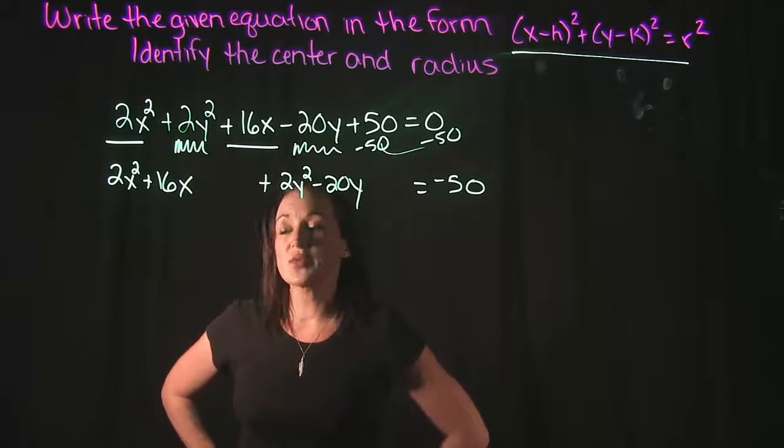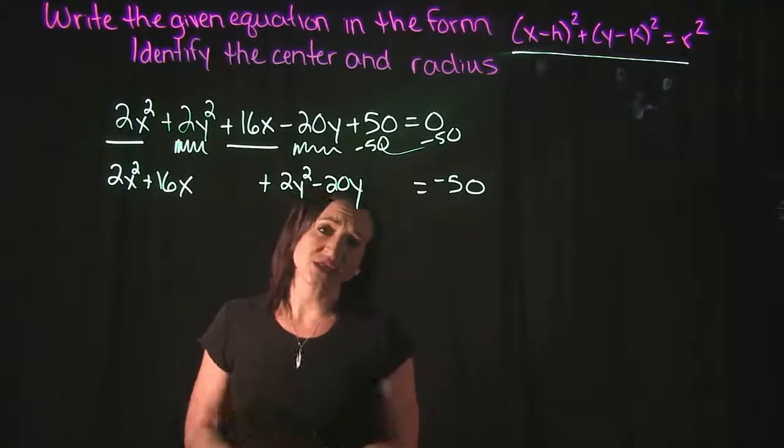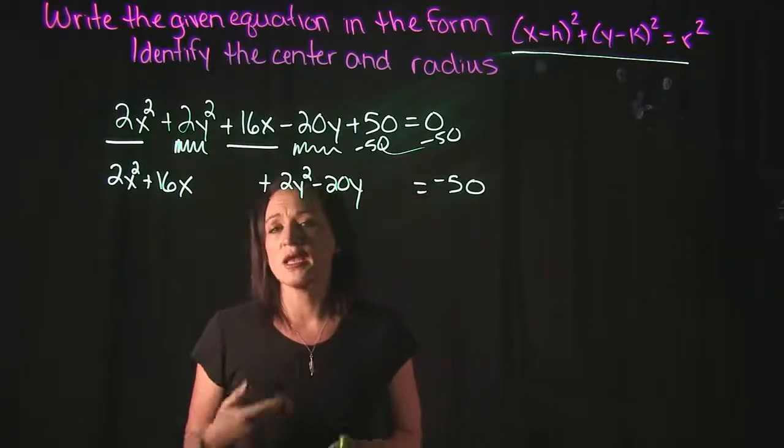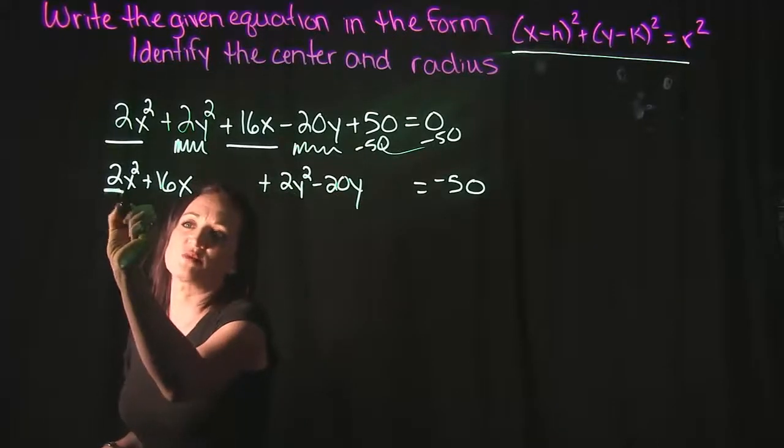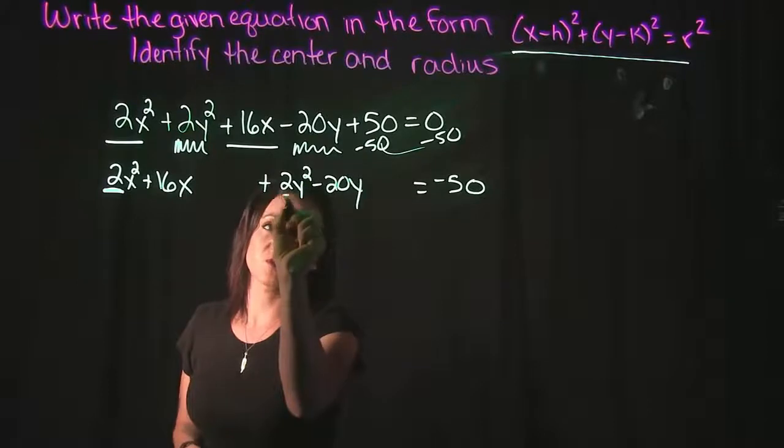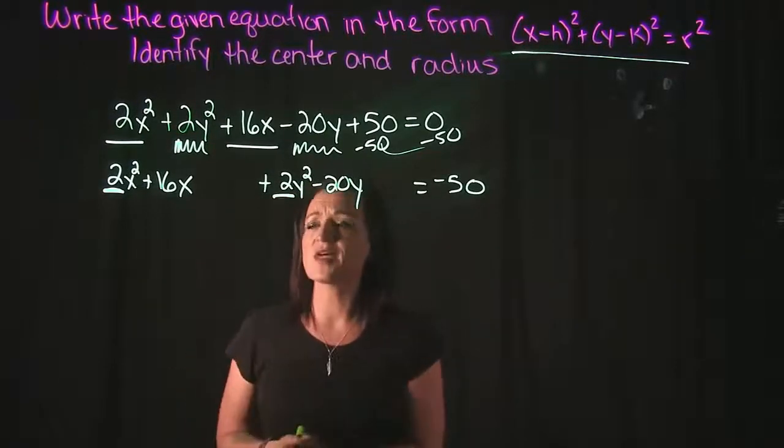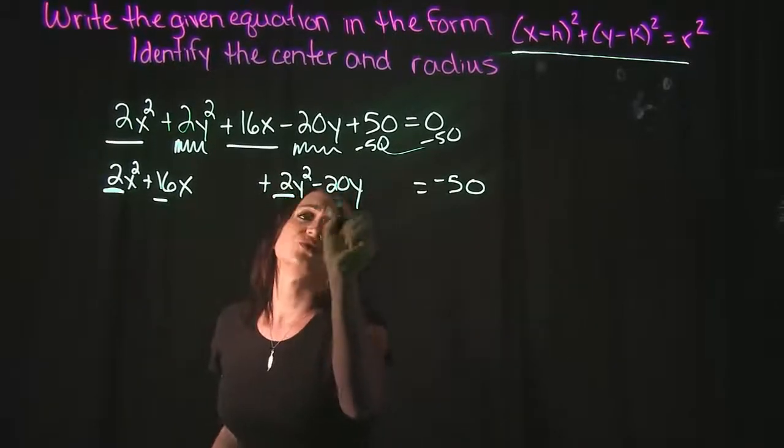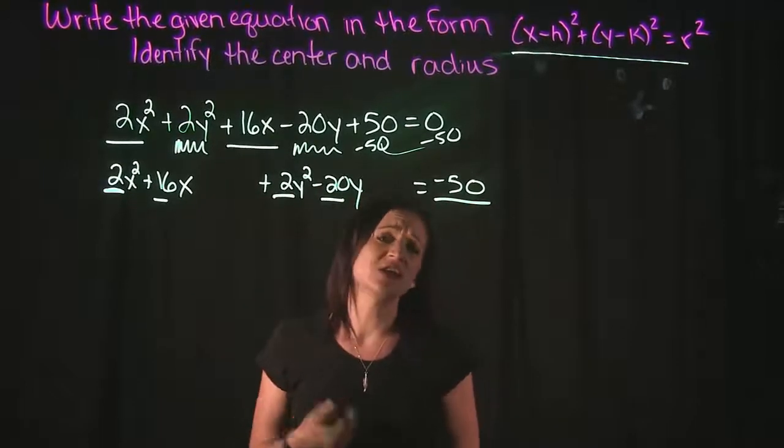Now, when it comes to completing the square, one of the main things that we need to have going on with our equation when completing the square is we want our leading coefficient to be a 1. So my leading coefficient for my x terms would be this 2 right here, and my leading coefficient for my y terms is also going to be this 2 right here. And actually, if I take a look at every term that I have in this equation, 2, 16, 2, 20, and -50, these are all even numbers.